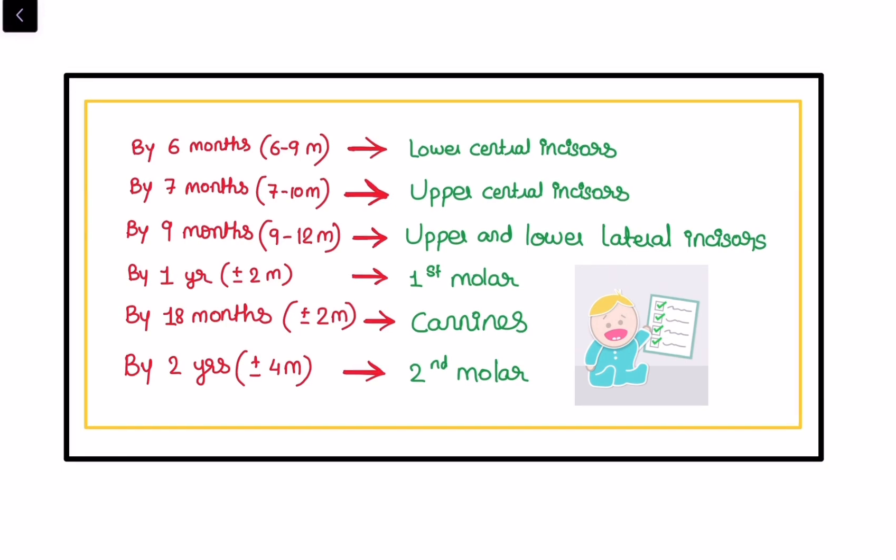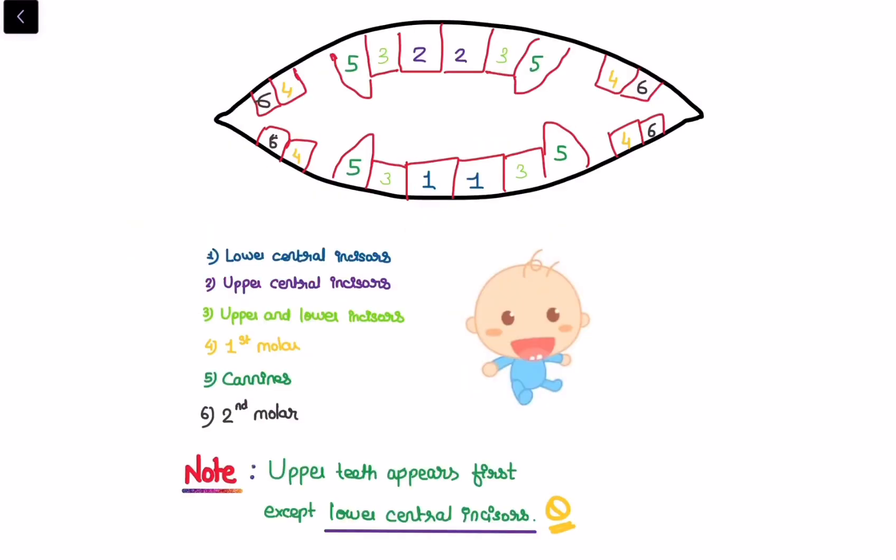But the question is, how to remember this table? So to simplify the learning, we have drawn the oral cavity with the labeling of number of teeth that appears in life for primary dentition in sequence. The first one is lower central incisors that appear by 6 months, given number 1. Second are the upper central incisors that appear by 7 months, upper and lower incisors that appear by 9 months, first molar that appears by 1 year, canines by appearance of 18 months, and second molar that appears by the age of 2 years. Do remember that the upper teeth appear first with only just one exception, that is lower central incisors. This lower central incisor appears first in life by 6 months and then upper teeth, upper central incisors appear by the age of 7 months. Guys, do remember the exceptions as the exceptions are the only thing that appears in exams most of the time.